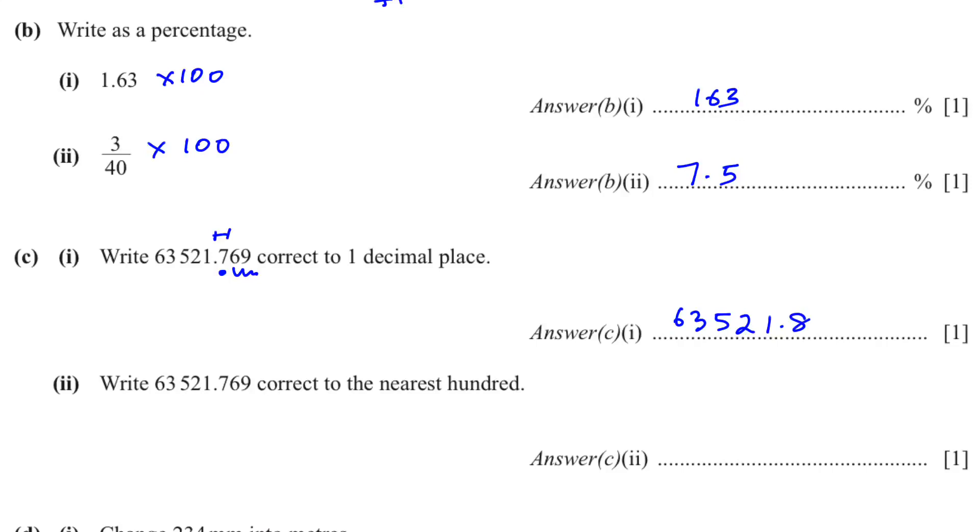In C2, we have to round this number correct to the nearest 100. So 100 is here, and the number after it is 2, which is less than 5. So I don't need to add 1. I can write 63,500. We have to change these numbers into zeros.